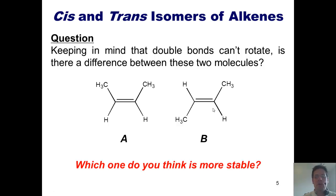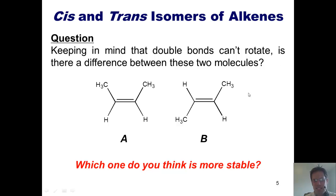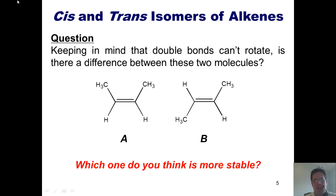Which of these two alkenes do you think is more stable? Obviously it's going to be alkene B because the two larger groups, these two methyls, are further away from each other.